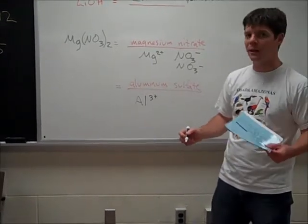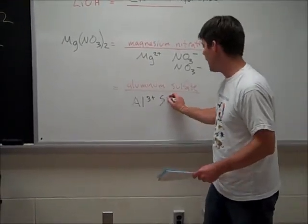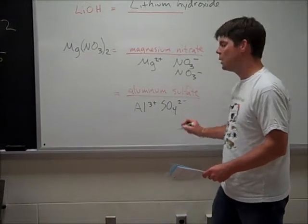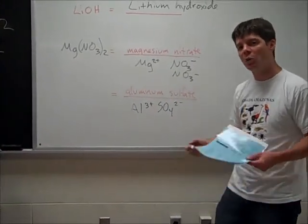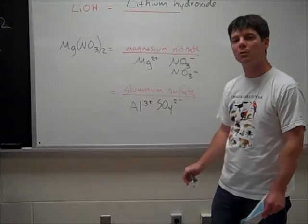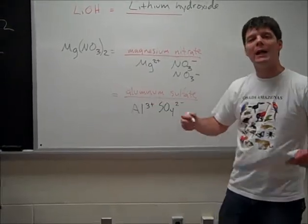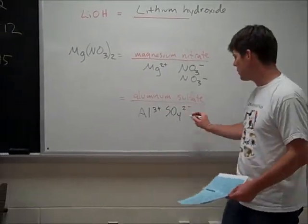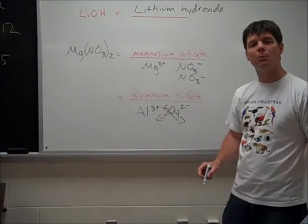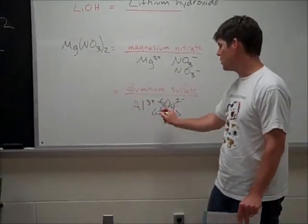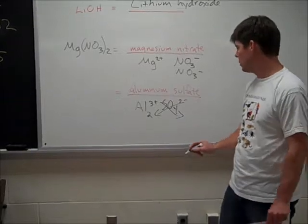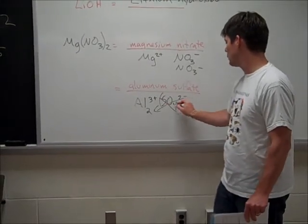Sulfate, it's a polyatomic ion, you find it on the back of your periodic table. SO4, two minus is the charge of that. So once again, I need to find the common multiple of two and three. Now, there's another way that we can do this, it's called the crisscross. So I'm going to pull those numbers down and across from the charges. So I come up with Al2, SO4, I would need three of those.